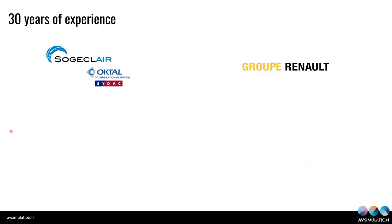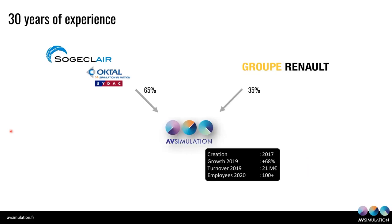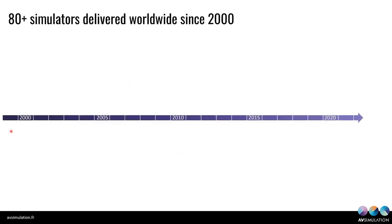Just a brief presentation about AV Simulation. Most of you already know this company — it's been created two or three years ago. It used to be a portion of Octal dedicated to the automotive market. It is still in the Sogeclair family, a really strong industrial group. It's also owned by Renault at 35%. This company is not really new and has been delivering 80 or more simulators since it was created.